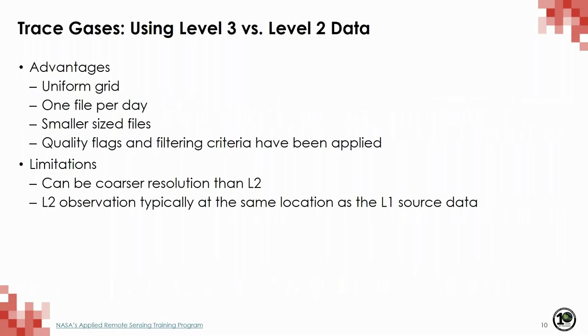Level 2 and Level 3 data are most often used for trace gas analysis. Level 3 data is typically gridded and is probably the easiest to use — usually, quality flags and filtering criteria have been applied for the user. But because Level 3 represents essentially an area-weighted average, the data can be influenced by differences in sampling rather than true geophysical differences, so any user should be cautious when drawing conclusions. Level 2 data provides the user with more control — it usually contains details on the performance of the algorithm, quality flags, and ancillary data sets, so an advanced user can decide which data to use or not use.